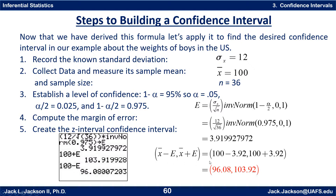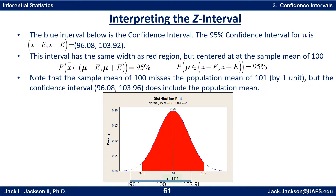Rounding to two decimal places, the confidence interval runs from about 96.08 to 103.92. If we really want to be sure we capture at least 95%, we could always round the upper bound up and the lower bound down, but most problems we'll just round normally. So the 95% confidence interval for mu goes from x-bar minus e to x-bar plus e — that's 96.08 to 103.92 — shown as a blue interval centered on 100.